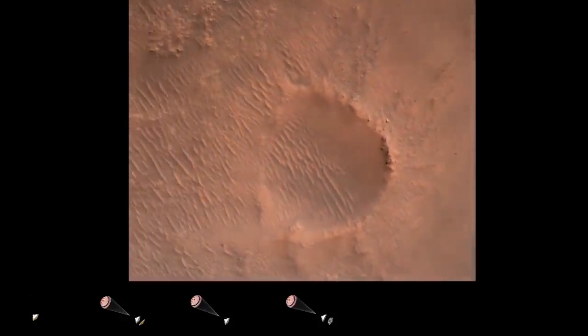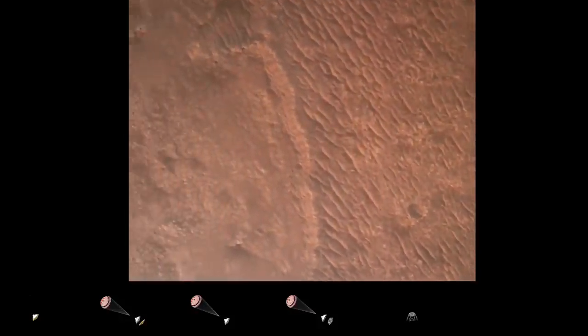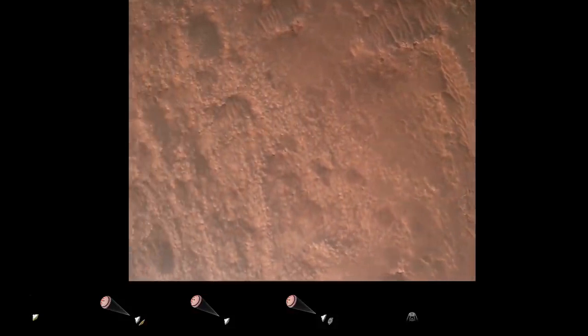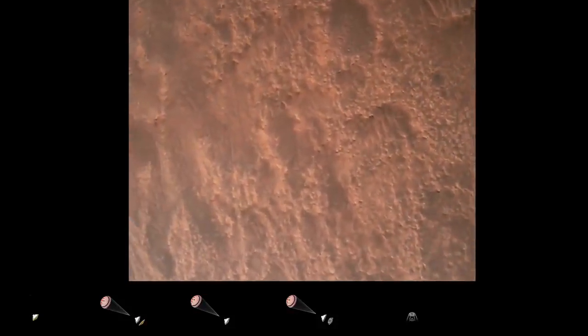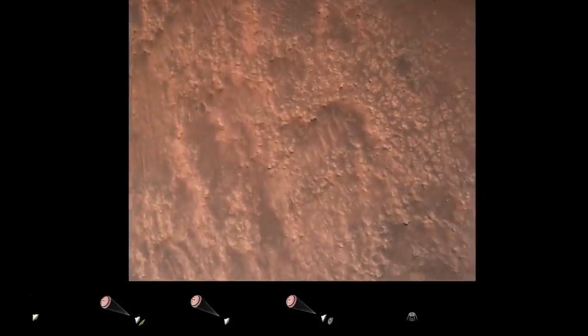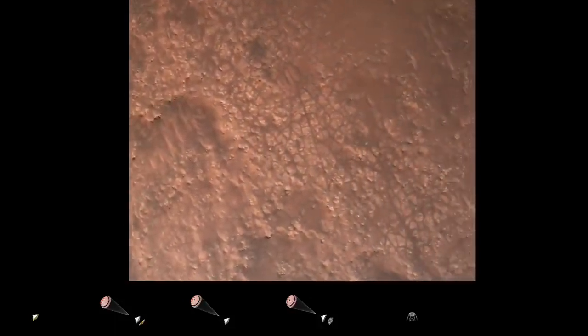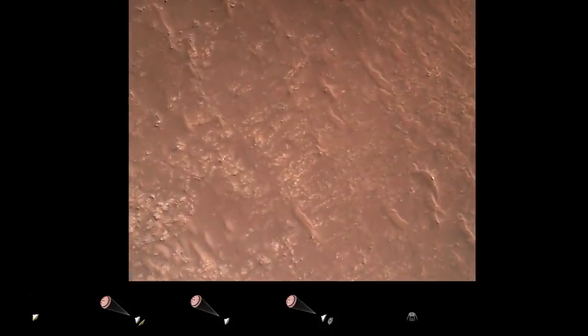We are currently performing the divert maneuver. Current velocity is about 75 meters per second at an altitude of about a kilometer off the surface of Mars. We have completed our terrain relative navigation. Current speed is about 30 meters per second, altitude of about 300 meters off the surface of Mars.